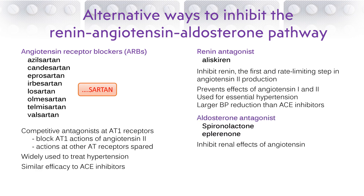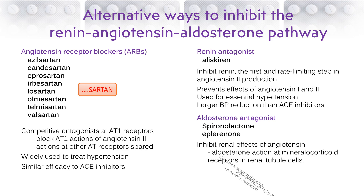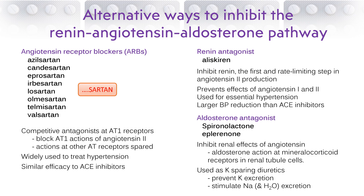Aldosterone antagonists act downstream of angiotensin to inhibit the effect of aldosterone released from adrenal cells. As aldosterone promotes the retention of sodium but loss of potassium in the distal convoluted tubules and collecting ducts of the kidney, the antagonists promote the opposite: sodium loss and potassium retention. They are therefore known as potassium-sparing diuretics and are used to produce diuresis without hypokalemia. These drugs have no effect on the vascular actions of angiotensin.